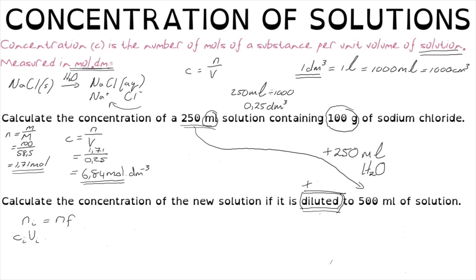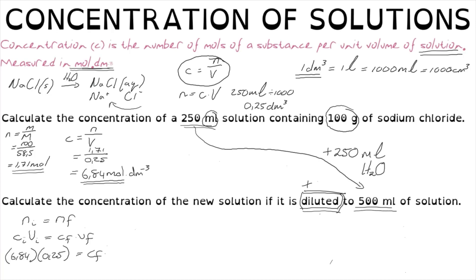Since the number of moles is constant, the initial concentration multiplied by the initial volume must equal the final concentration multiplied by the final volume: C₁V₁ = C₂V₂ (because n = C × V). Our initial concentration is 6.84 mol/dm³ and initial volume is 0.25 dm³; the final volume is 500 mL = 0.5 dm³. Solving gives a final concentration of 3.42 mol/dm³ — which makes sense because doubling the volume halves the concentration.